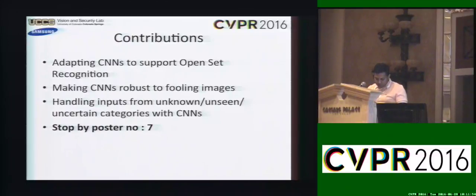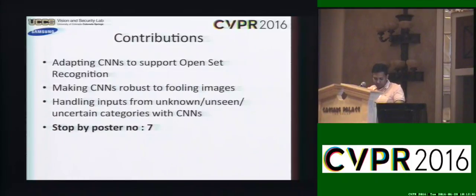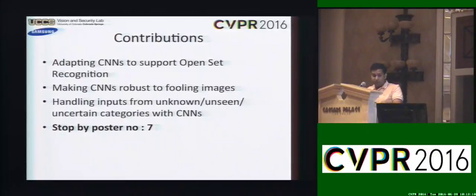In conclusion, we presented theory and a method for adapting CNNs to support open-set recognition. Our approach makes CNNs robust to handling fooling images. The proposed method also provides a way to reject images from unknown, unseen, and uncertain categories with CNNs. Thank you, and please stop by Poster 7 for more details.